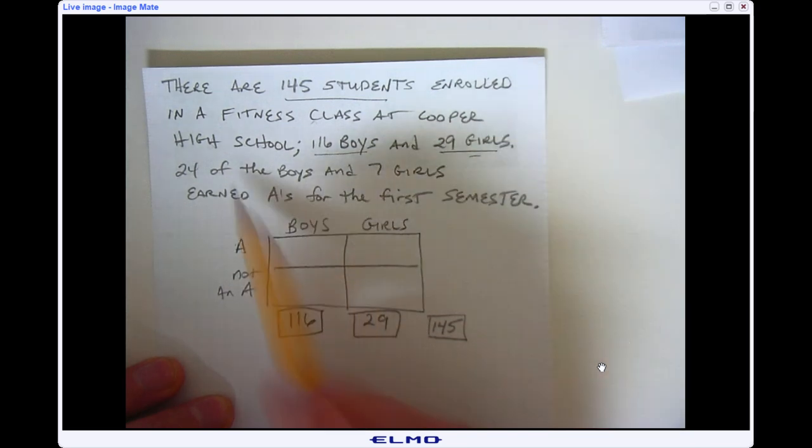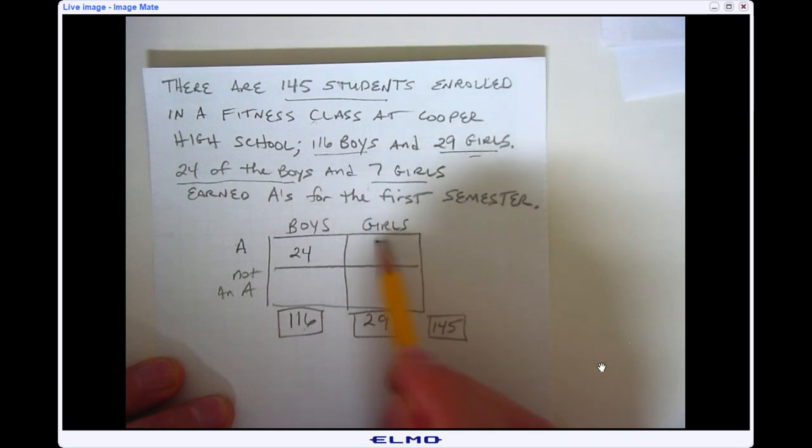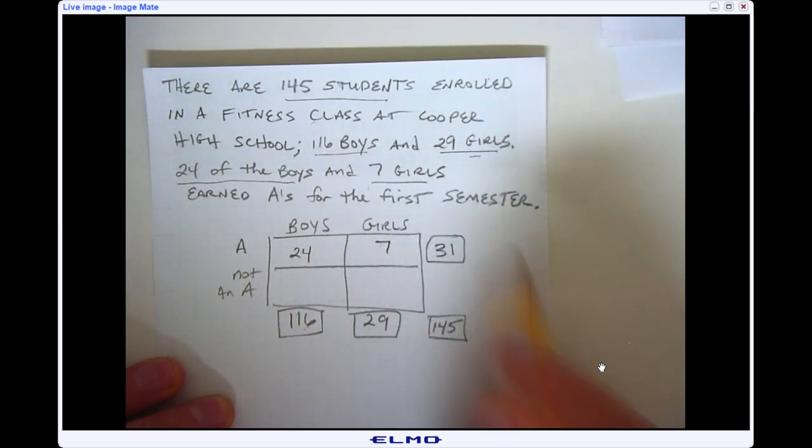It also says 24 of the boys received an A so 24 boys here and 7 girls got an A. So now if I add up this row I would end up with 31 students that got an A. So to find out this missing number here I have to figure out 31 plus what is 145 and that's going to be 114.